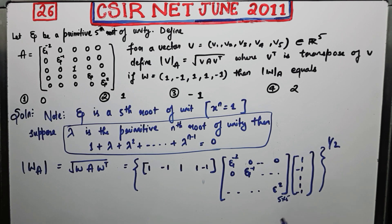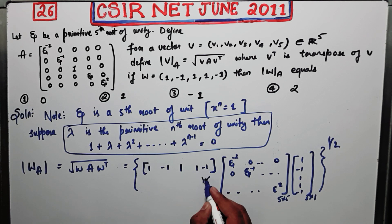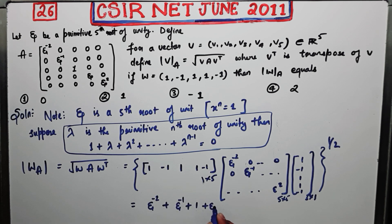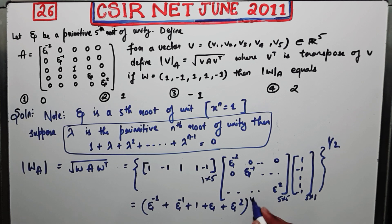A is a 5×5 matrix and W is a 5×1 matrix, so A·W^transpose results in a 5×1 matrix. After multiplying the 1×5 matrix W with this 5×1 result, you get a real number. After calculating this product of these three matrices, you will get: xi^(-2) + xi^(-2) + xi^(-1) + 1 + xi + xi^2.